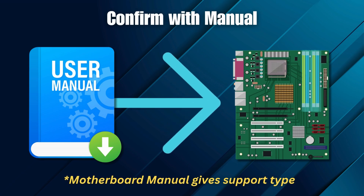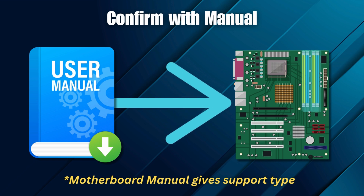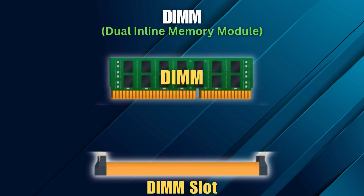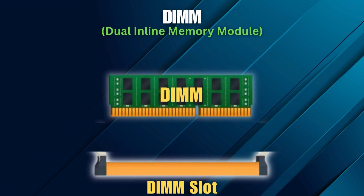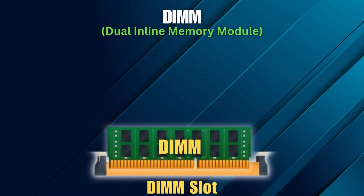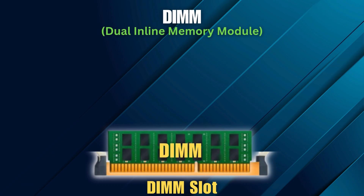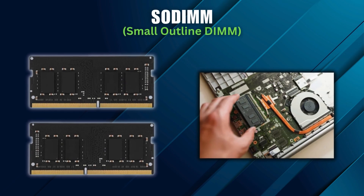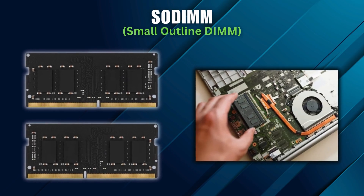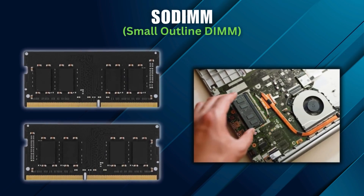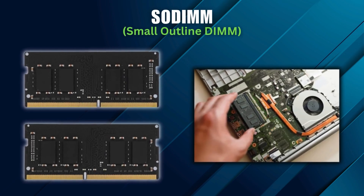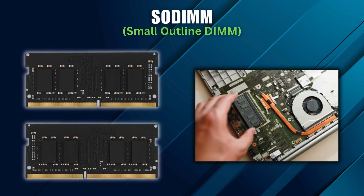Most modern computers today use either DDR4 or DDR5. Always check your motherboard's manual to confirm exactly what type and speed it supports. On desktop PCs, you'll find the standard full-size sticks called DIMMs, short for Dual Inline Memory Modules — long, rectangular sticks you slot into your motherboard. On laptops, you'll usually see a smaller version called SODIMM, or Small Outline DIMM. It's the same technology, just compacted to fit in tighter spaces.